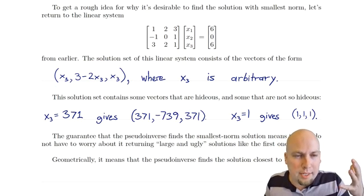What happens if your linear system doesn't have a solution? If there are no solutions, A†b is not going to be a solution, but in some sense it's the best non-solution — the closest thing to a solution. It's the vector that minimizes the distance between Ax and b. Our goal is to get Ax = b; the next best thing is to make the norm of (Ax − b) as small as possible, and that's exactly what the pseudo-inverse method does when we choose x = A†b.